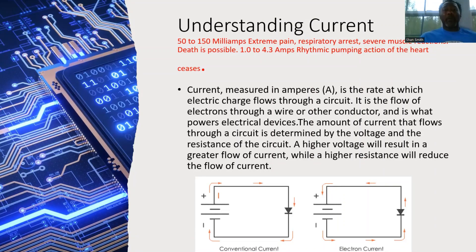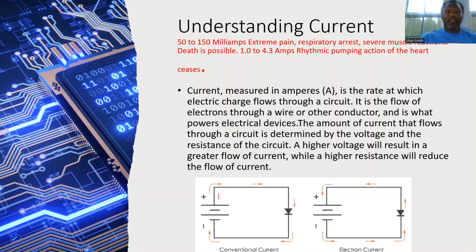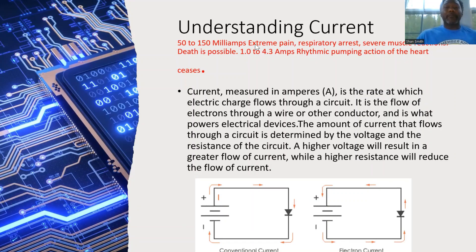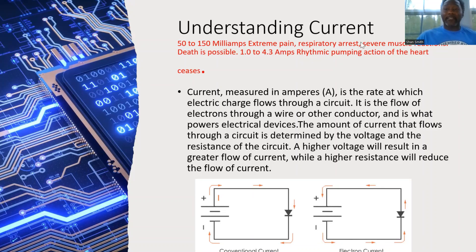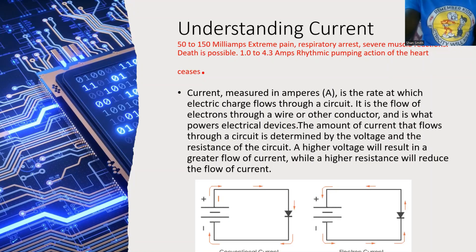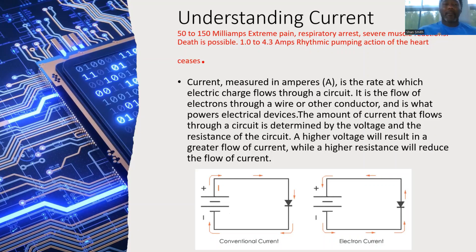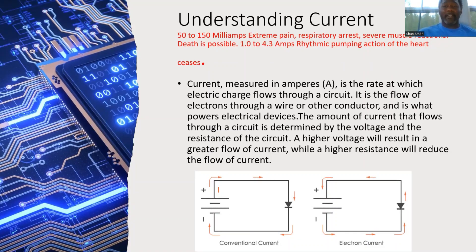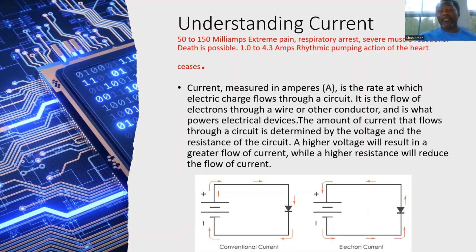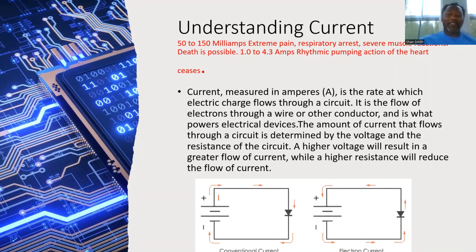Current will always take the path of least resistance — we must always be careful. Even 50 to 150 milliamps can cause extreme pain, respiratory arrest, severe muscle reactions, and possible death. One amp and above can cause cardiac arrest. Current is measured in amps; it is the rate at which electrical charge flows through a circuit. Higher voltage results in higher current; lower voltage results in lower current.